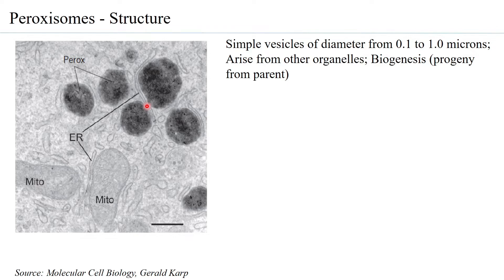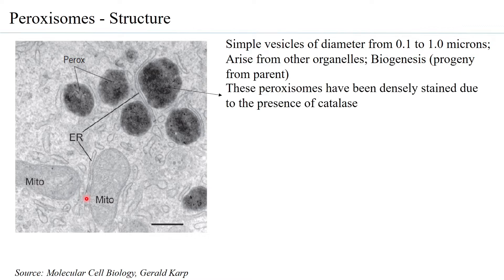Peroxisomes arise from other organelles — they can arise from the Golgi, from the ER, or from mitochondria. What is also observed is that from pre-existing peroxisomes, new peroxisomes can be generated. This biogenesis is very similar to mitochondria, since mitochondria can also carry out biogenesis.